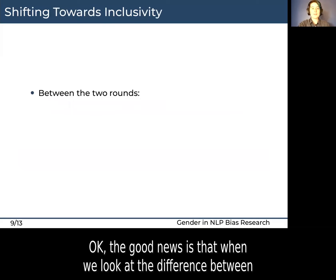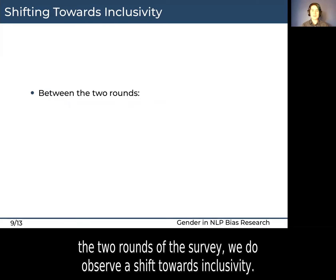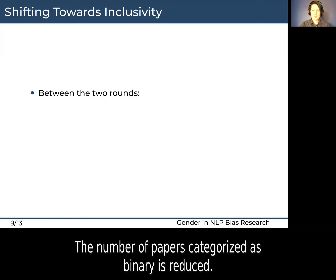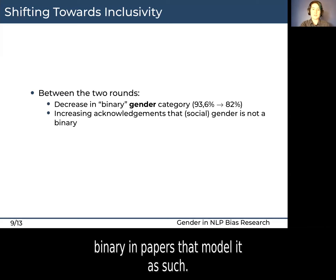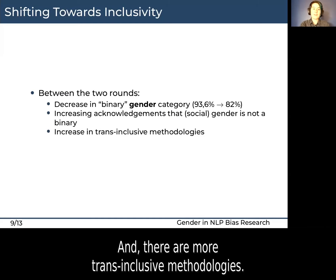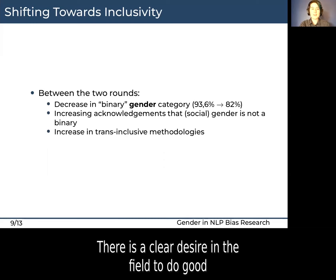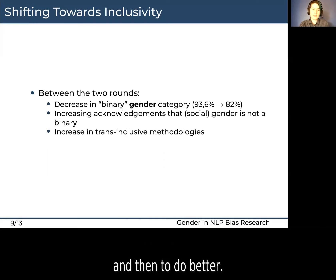The good news is that when we look at the difference between the two rounds of the survey, we do observe a shift towards inclusivity. The number of papers categorized as binary is reduced, there are many more acknowledgements that gender isn't actually a binary even in papers that model it as such, and there are more trans-inclusive methodologies. There's a clear desire in the field to do good and then to do better.